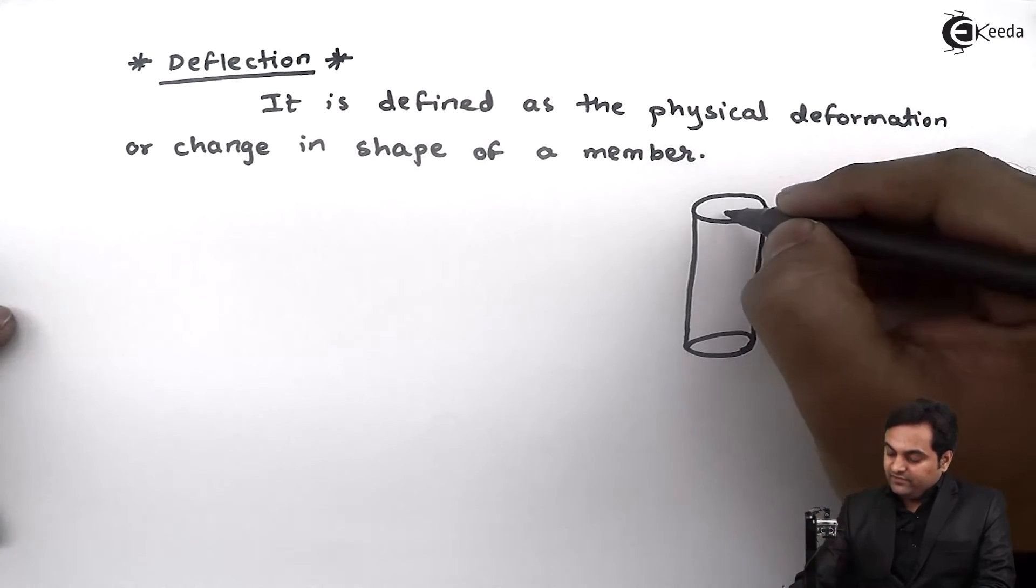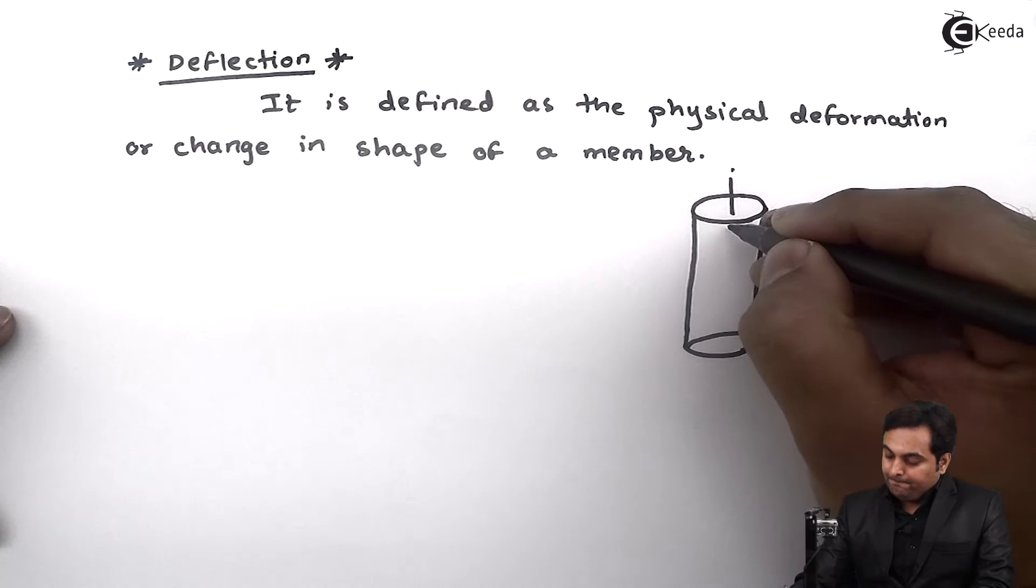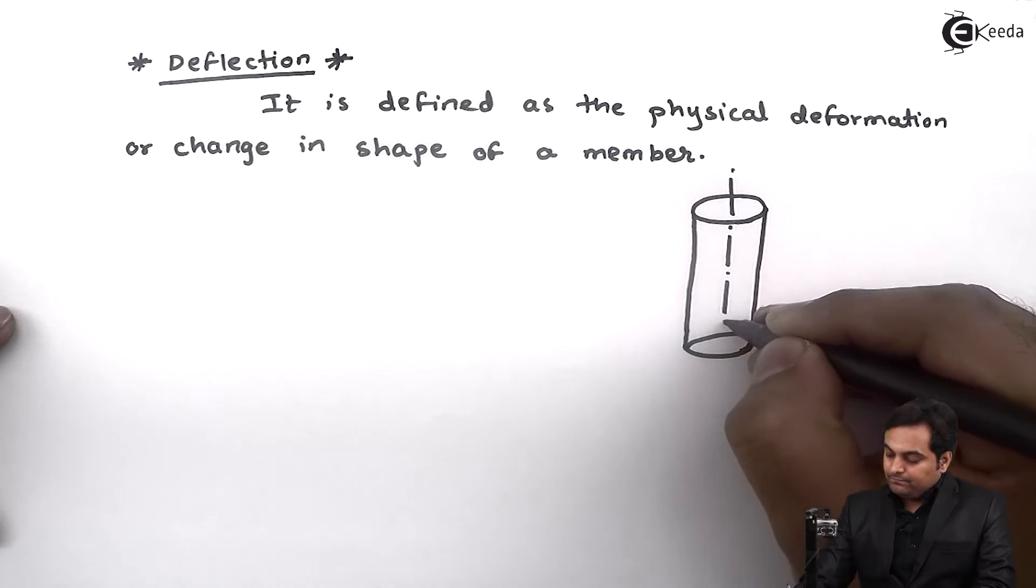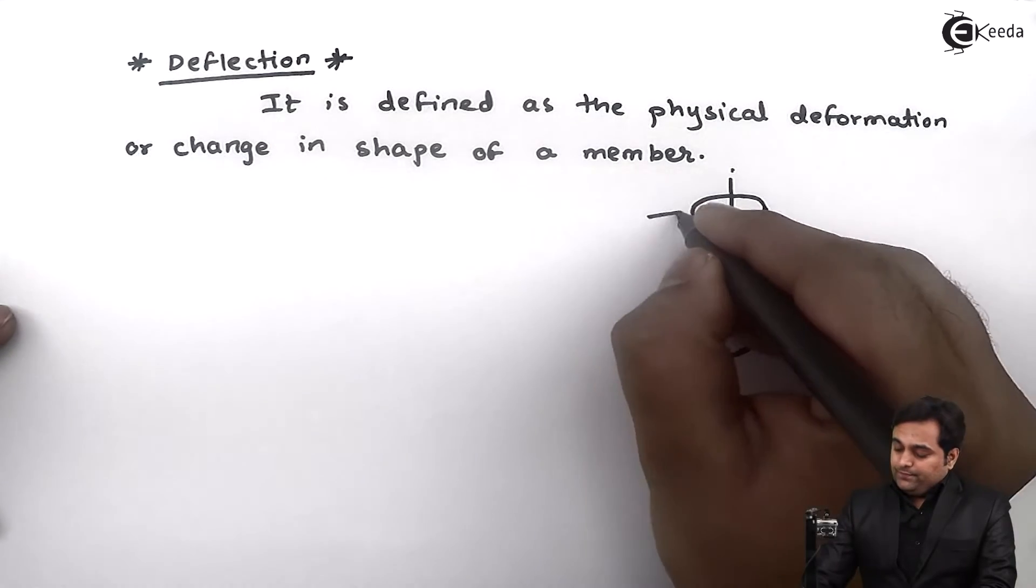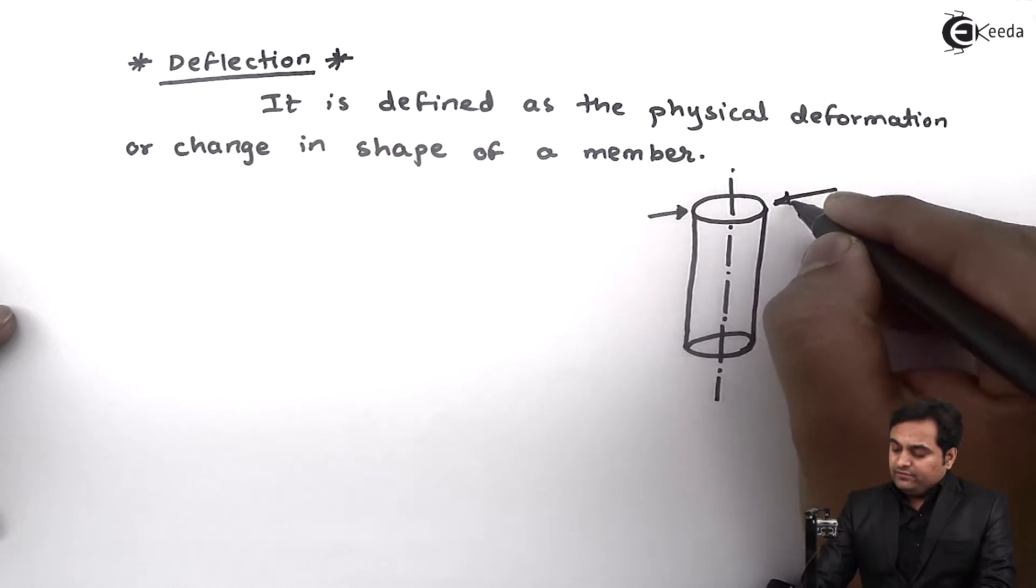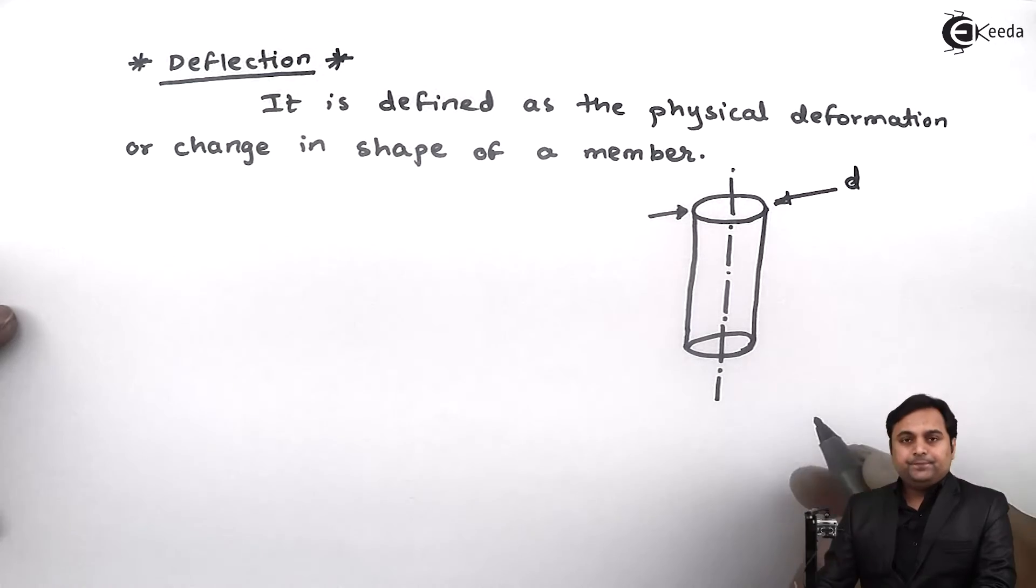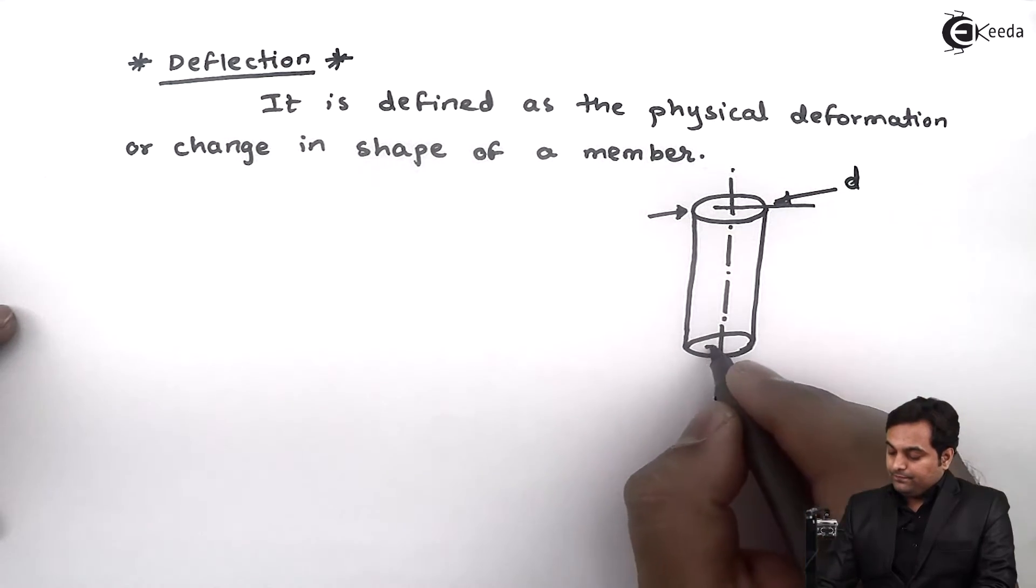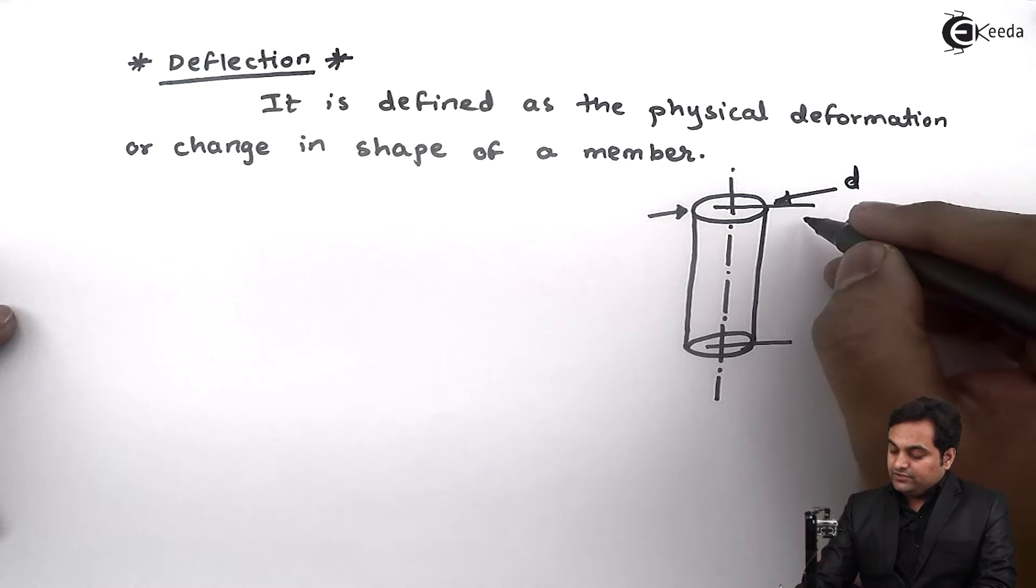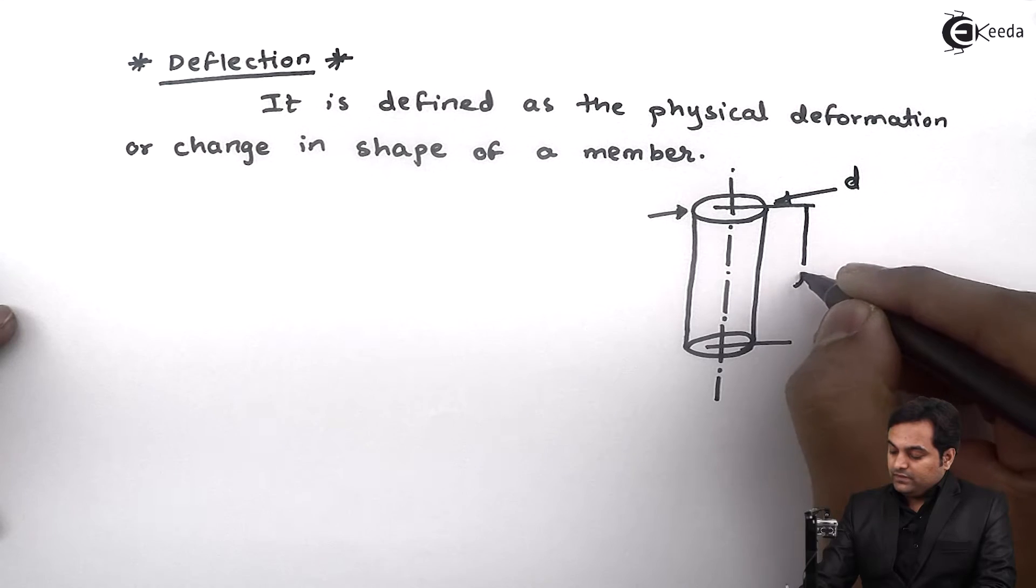Now suppose we have a rod. This rod will have diameter d. The length of this rod is l.